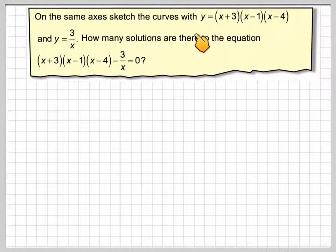On the same axis, sketch the curves with y equals x plus 3, x minus 1, x minus 4, and y equals 3 over x. Find the solutions to the equation x plus 3, x minus 1, x minus 4, minus 3 over x equals 0.